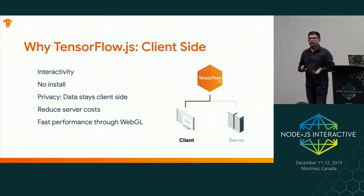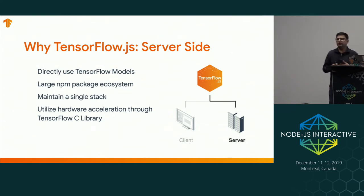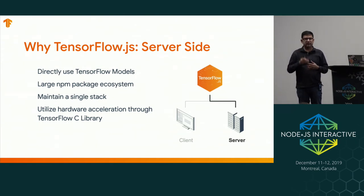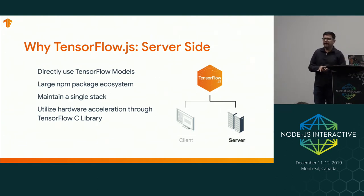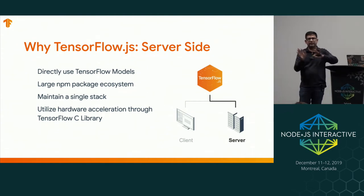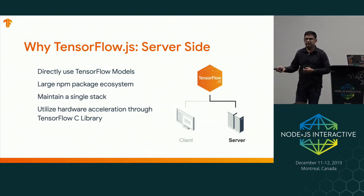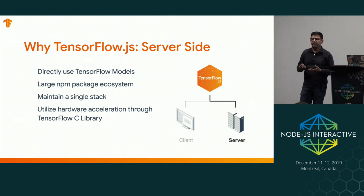Because we use WebGL acceleration, you get really, really good performance. On the server side, you can run more powerful models that may not be practical client side, taking full advantage of whatever hardware you have — multi-core machines, GPUs, or other custom hardware. There is a very large NPM package ecosystem, so if you're using machine learning in Node you can benefit from this whole ecosystem. You can bring machine learning directly into your Node stack, eliminating the need for separate Python data science teams. And because we bind to TensorFlow's C library when running server side, we get significant performance benefits.